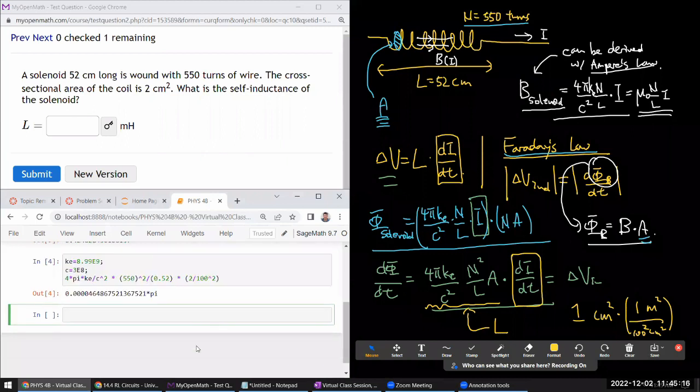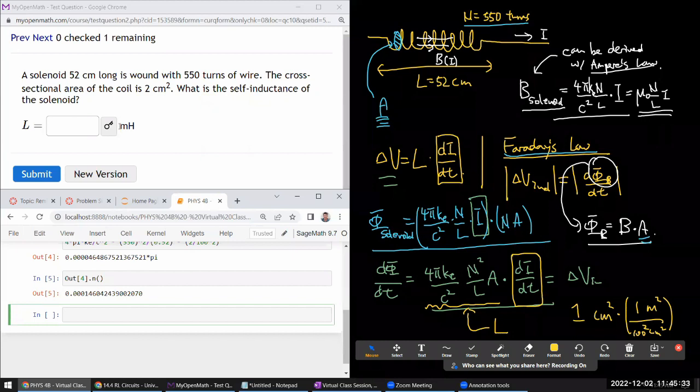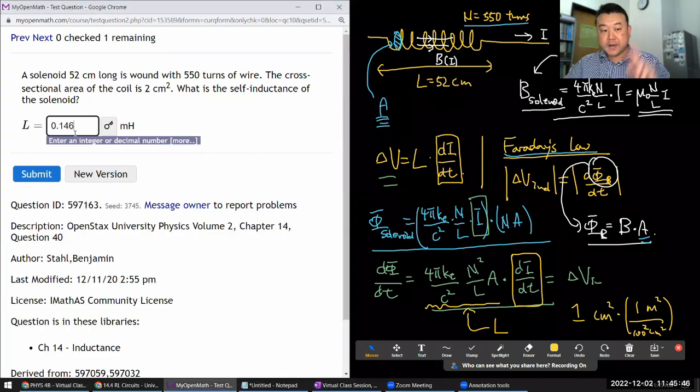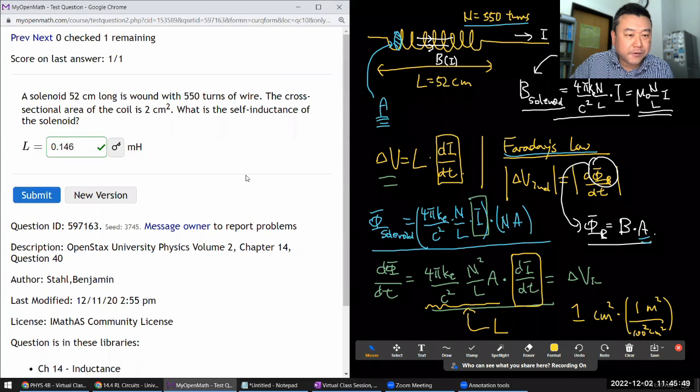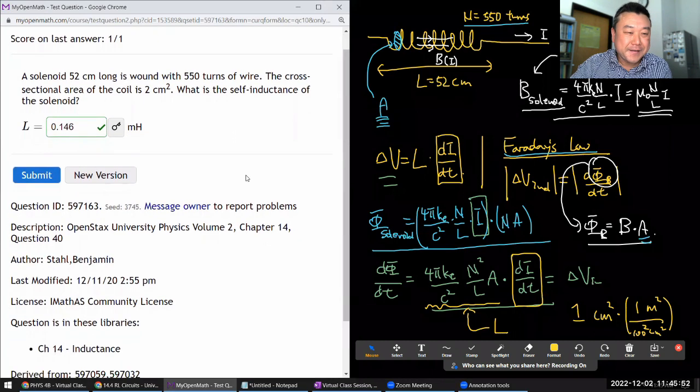I'm going to take that output and put it into decimal approximation so that I can enter it more easily. So that should be in the basic SI unit, Henry. I'm going to change that to millihenry by taking it and multiplying it by 10 to the power of 3 because there are a thousand millihenrys in the Henry. So 0.146. So that's right. Good.